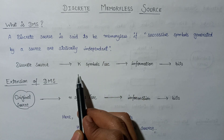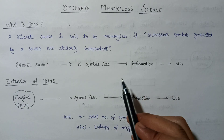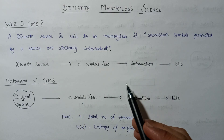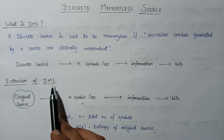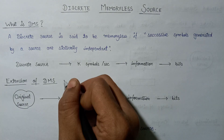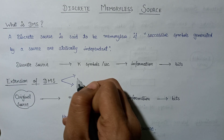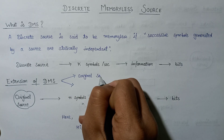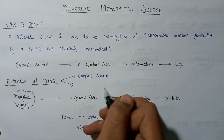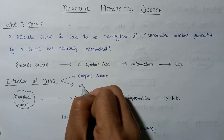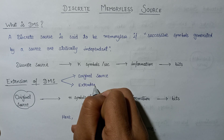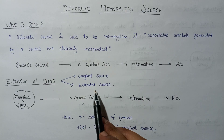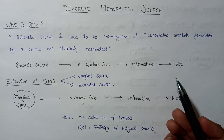Now let us look at the extension of this discrete memory-less source. While studying this extension, we will talk about two types of sources: the first will be the original source and the second will be the extended source. We will classify both sources on the basis of the number of symbols and also the entropy.